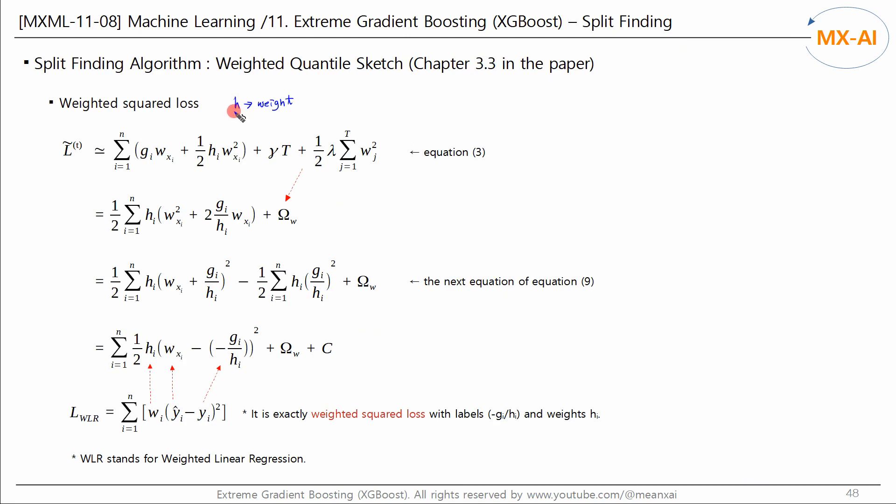Let's look at why h can be used as the weights for data points. First, let's look at the regularized learning objective function presented in equation 3 of the paper. This is a quadratic approximation of the Taylor expansion. And the second and third terms are the regularized terms. This equation can be rewritten as follows. Taking this out of parentheses, we can rewrite it as follows. We can write w squared here, and we can rewrite the gw like this. And we will write the regularized terms as omega w.